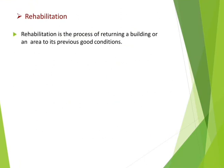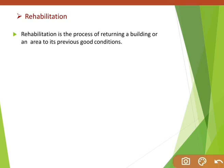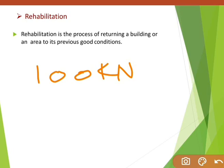The next concept is rehabilitation. Rehabilitation is the process of returning a building or an area to its previous good condition. For example, suppose you constructed a building and the beam of that building was designed for a load carrying capacity of 100 kN. But after use of a few years, that beam's capacity decreased to 80 kN.